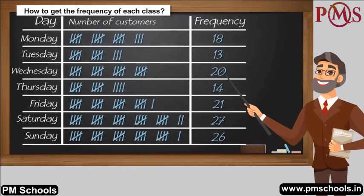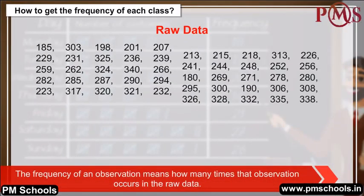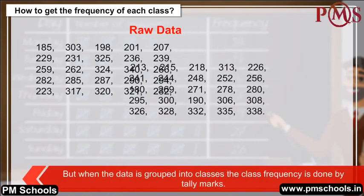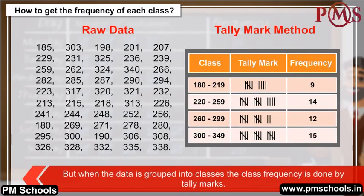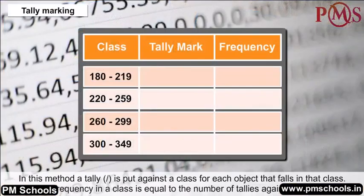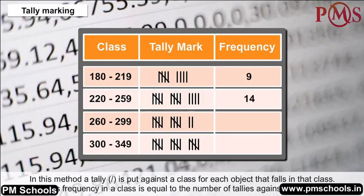The frequency of an observation means how many times that observation occurs in the raw data. When data is grouped into classes, the class frequency is determined by tally marks. In this method, a tally is put against a class for each object that falls in that class. Thus, the frequency in a class is equal to the number of tallies against that class.